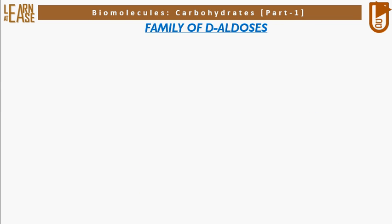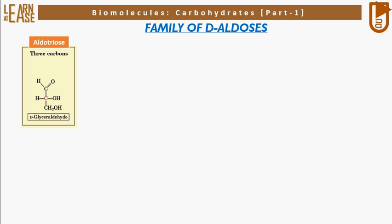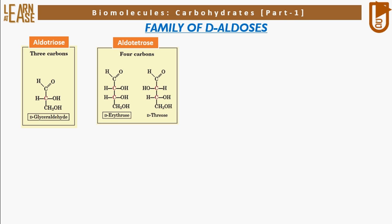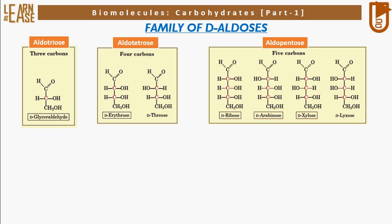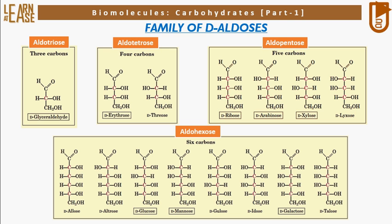Now let me show structures of some commonly found monosaccharides in the family of D-aldoses. The three-carbon aldotriose is glyceraldehyde. Four-carbon aldotetroses include erythrose and threose. Five-carbon aldopentoses include ribose, arabinose, xylose, and lixose. Six-carbon aldohexoses include alose, altrose, glucose, mannose, gulose, idose, galactose, and talose. In the image, all monosaccharides are represented in D-isomeric form.